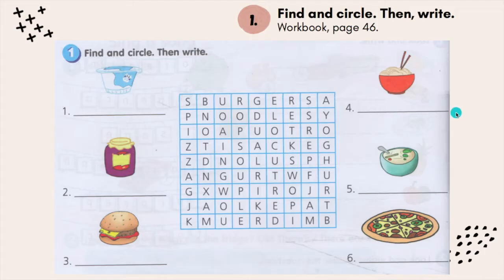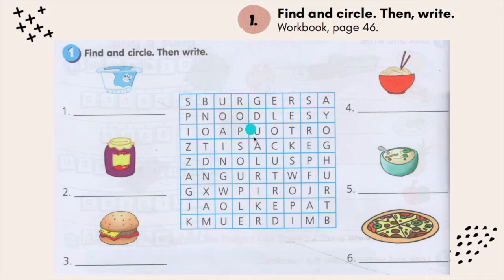Next, let's look at your workbook, page 46. Look at the first activity: find and circle, then write. You need to look at the picture — for example, number 1 is yogurt, so find the word, circle it, and write the word. Then move on to number 2 until number 6.